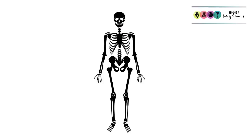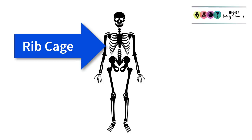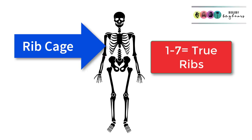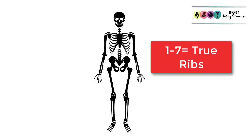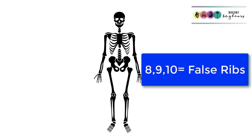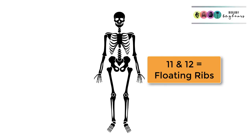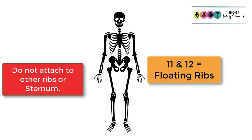The last part of the axial skeleton is the ribcage. It's made up of 12 pairs of ribs. The first seven are known as true ribs because they wrap around and attach to the sternum or breastbone. The next three are called false ribs because they don't directly attach to the sternum — they attach to the seventh pair of ribs. The last two pairs are known as floating ribs because they don't attach to anything, neither the seventh pair nor the sternum.